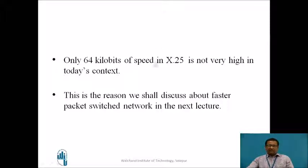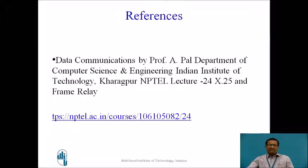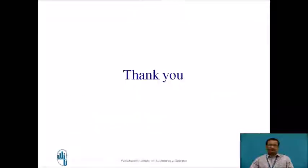The X.25 speed limit is only 64 kilobits, which is very low in the context of today's data transfer. That is why we shall discuss a faster packet switching network in the next lecture. References: Data Communication by Professor Ajit Pal, Department of Computer Science and Engineering, Indian Institute of Technology, Kharagpur. The contents are taken from NPTEL lecture number 24 on X.25 and Frame Relay. Thank you very much.